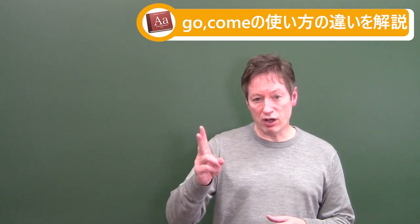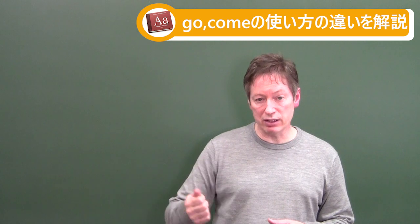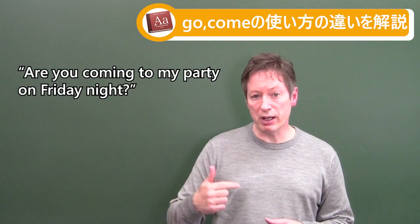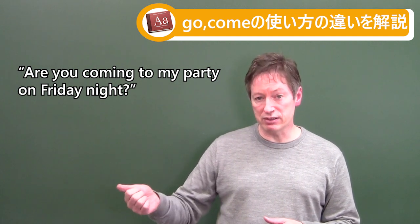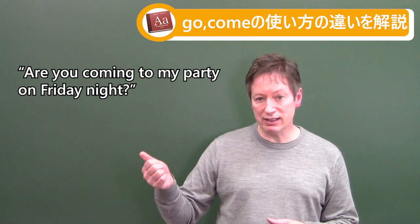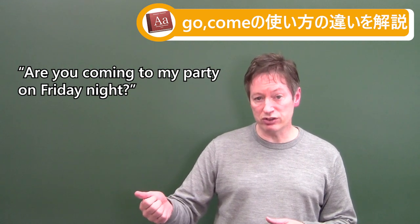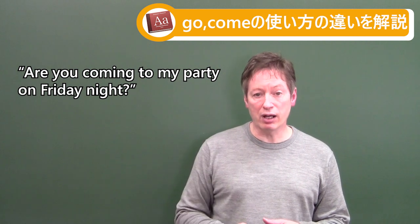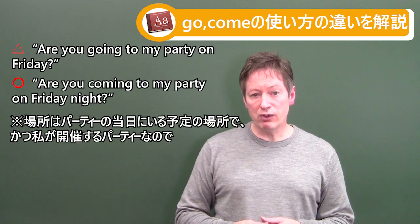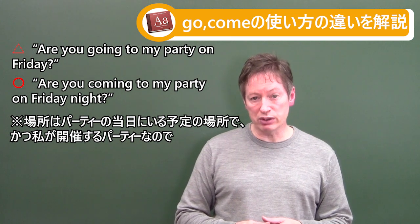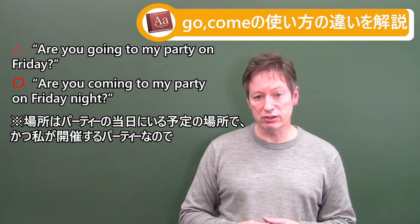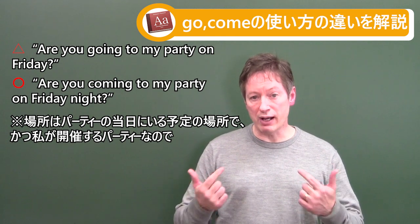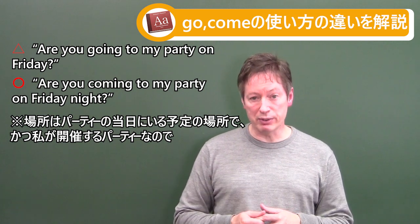Now, two friends are talking and one friend is having the party — it's his party. He's asking another friend, 'Are you coming to my party on Friday night?' The location is not that person's home yet, but because it is his home, the question uses 'come.' If you say 'Are you going to my party?' it's not a total mistake, but 'Are you coming to my party on Friday night?' is more natural. The location is where I'm going to be and it's my party, so 'Are you coming to my party?'